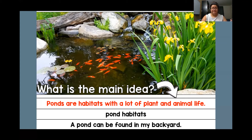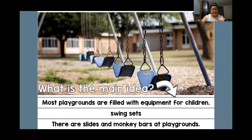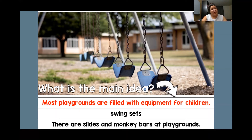Here's our second image. Look at this really closely and decide what is the main idea of the image and what is the main topic if it's available. Your options are: most playgrounds are filled with equipment for children; swing sets; or there are slides and monkey bars at playgrounds. The main idea I found is most playgrounds are filled with equipment for children. The topic for me would be playgrounds, and that's not listed as an option here.